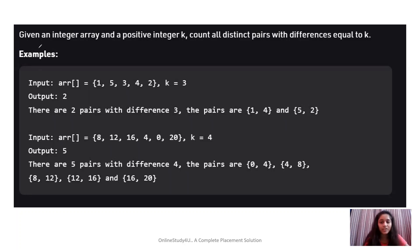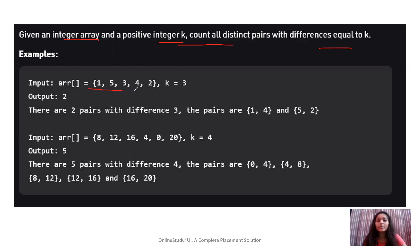Let's move on to our coding question and understand it first. We are given an integer array and a positive integer k, and we need to count all distinct pairs with difference equals to k. So we will be given an array, we will be given a value k, and we need to find all the pairs whose difference will be equal to this value k.